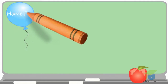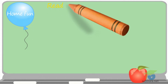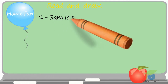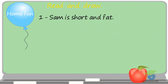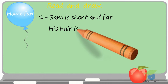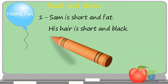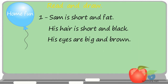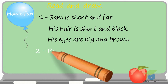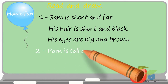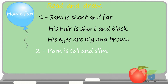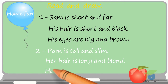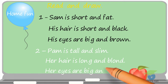Home fun. Read and draw. 1. Sam is short and fat. His hair is short and black. His eyes are big and brown. 2. Pam is tall and slim. Her hair is long and blonde. Her eyes are big and blue.